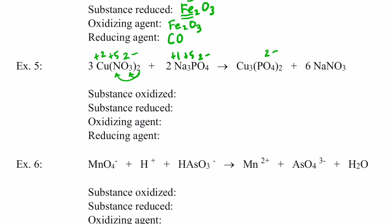We have two phosphates — each phosphate is three negatives, so that's six negatives, stuck to three coppers, so each copper must be positive two. We have eight oxygens giving sixteen negatives, three coppers giving six positives, so I need ten more positives — each phosphorus must be positive five. For NaNO₃: oxygen is two negative, sodium is positive one, and nitrogen turns out to be positive five.